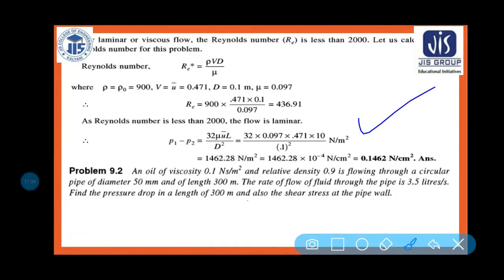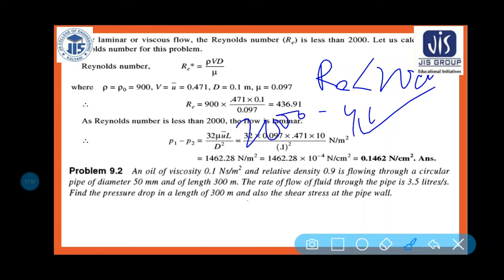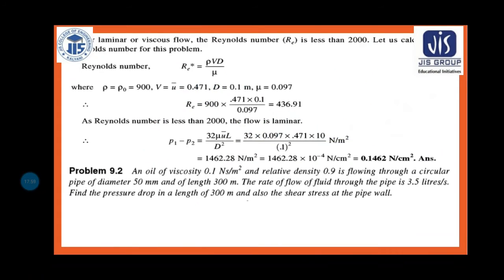This type of problem will appear in your final exam. Always find the Reynolds number first: if Re < 2000, it is laminar; if Re is 2000 to 4000, it is transition state; and if Re > 4000, it is turbulent flow.